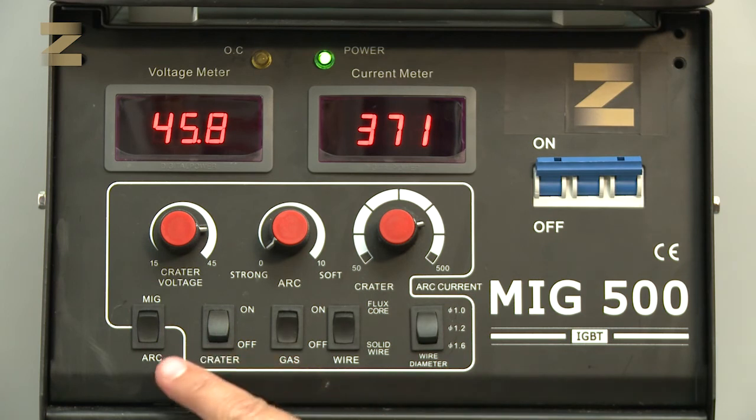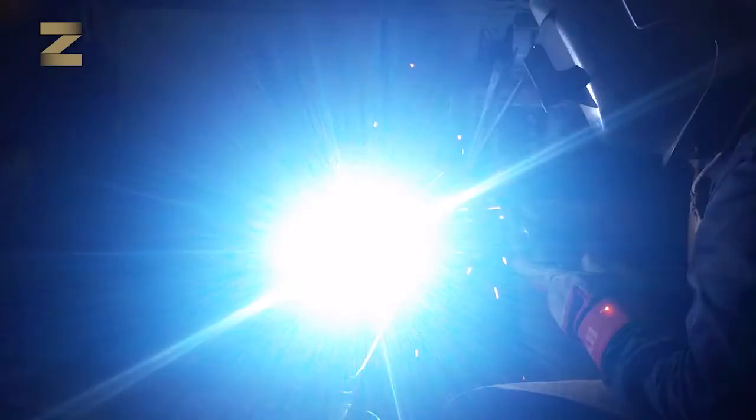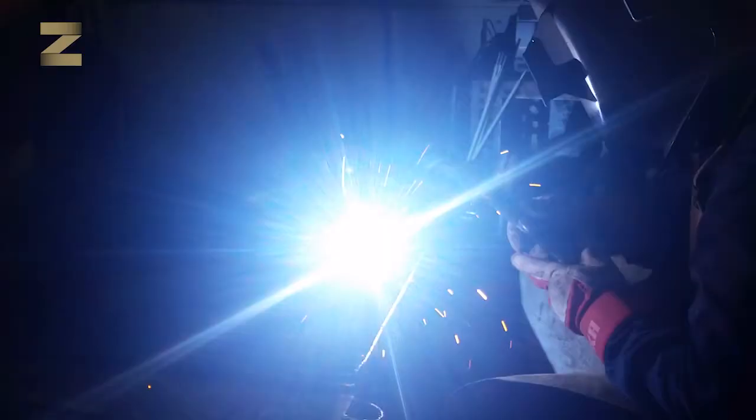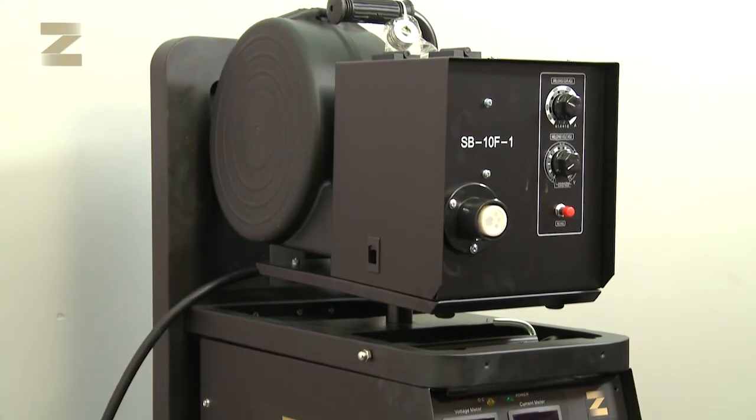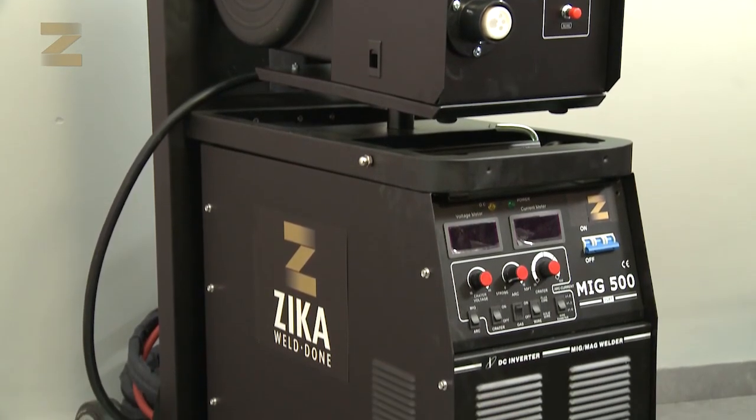Select arc mode on the power supply. Now you are ready to weld. The operating instructions contain recommended welding data to ensure you get the best welding performance from your machine. Make sure to follow these steps in order to enjoy high quality and professional MIG welding.